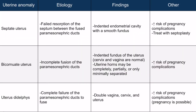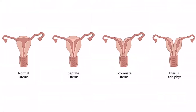The last uterine anomaly is uterus didelphys. This is due to complete failure of the paramesonephric ducts to fuse, and it presents with a double vagina, cervix, and uterus. Pregnancy is still possible despite this anomaly, it just carries additional risks, just like with the other two anomalies. From this image, we can see that a uterus didelphys has a double uterus, cervix, and vagina.